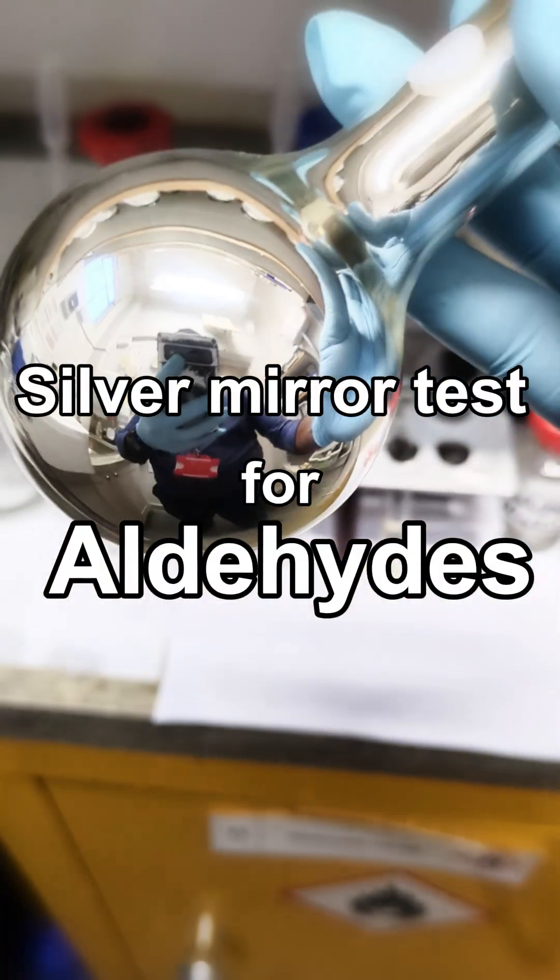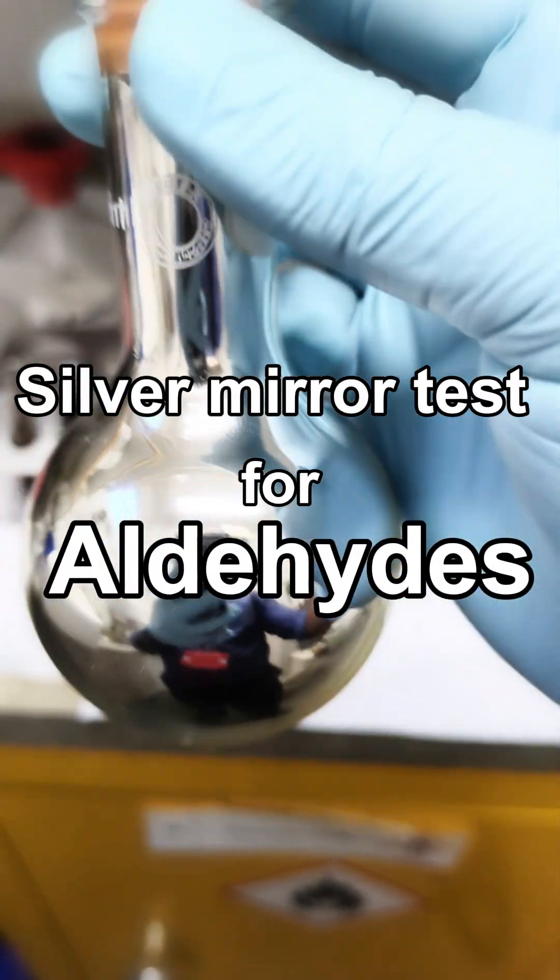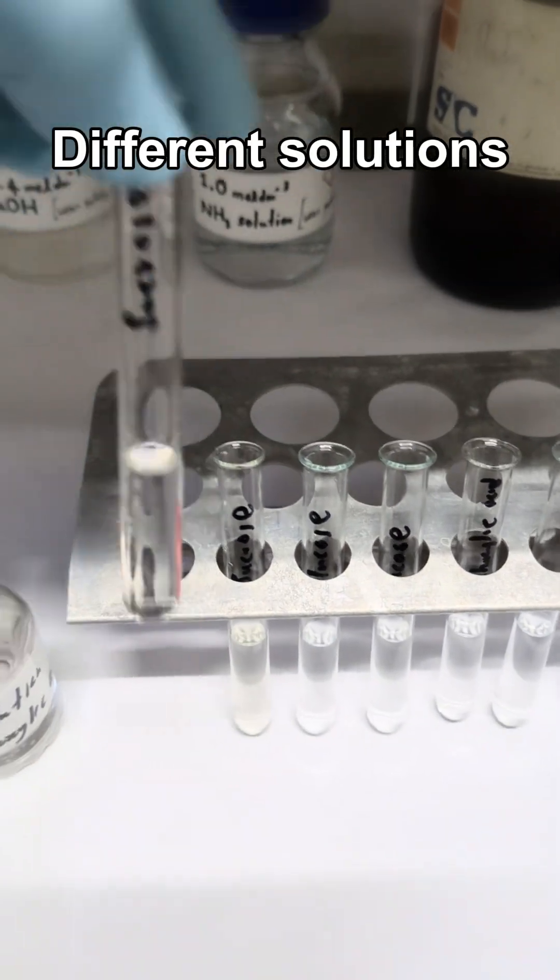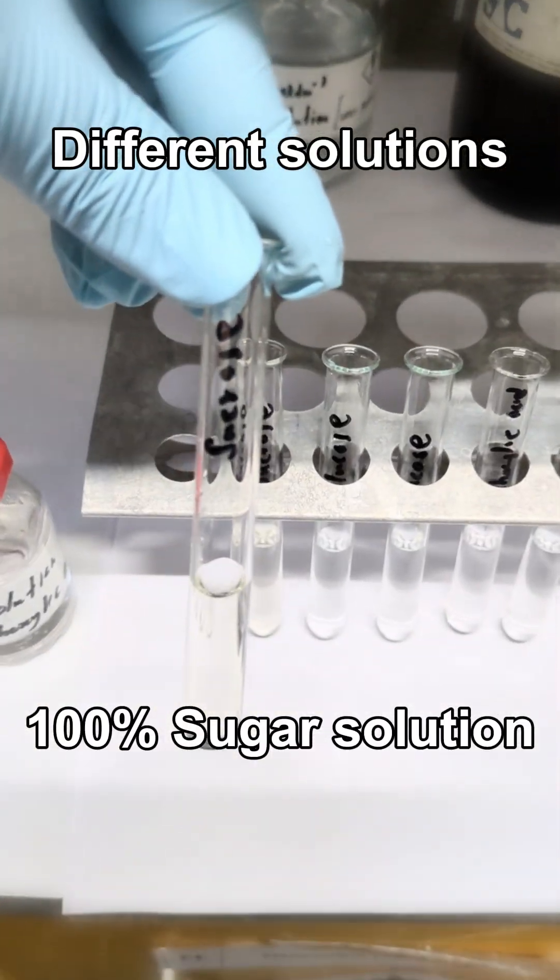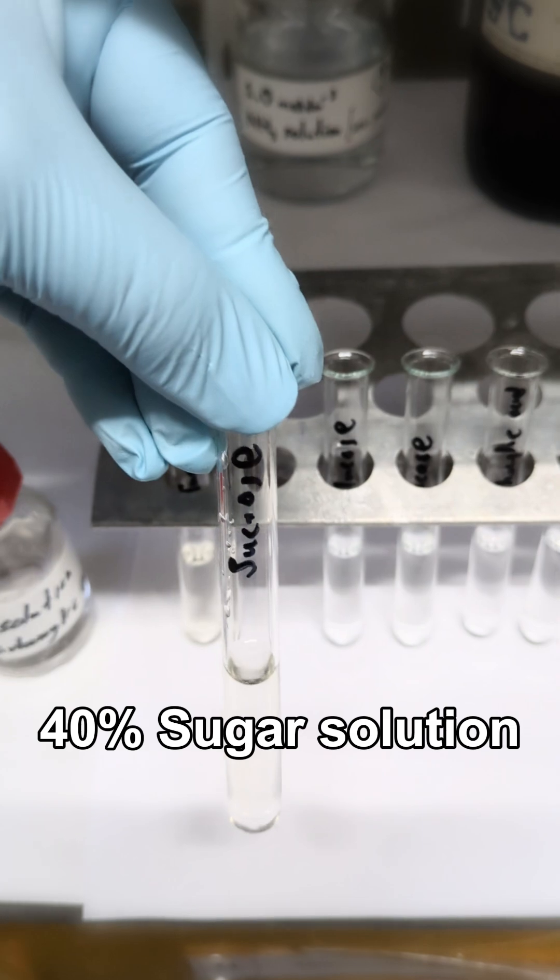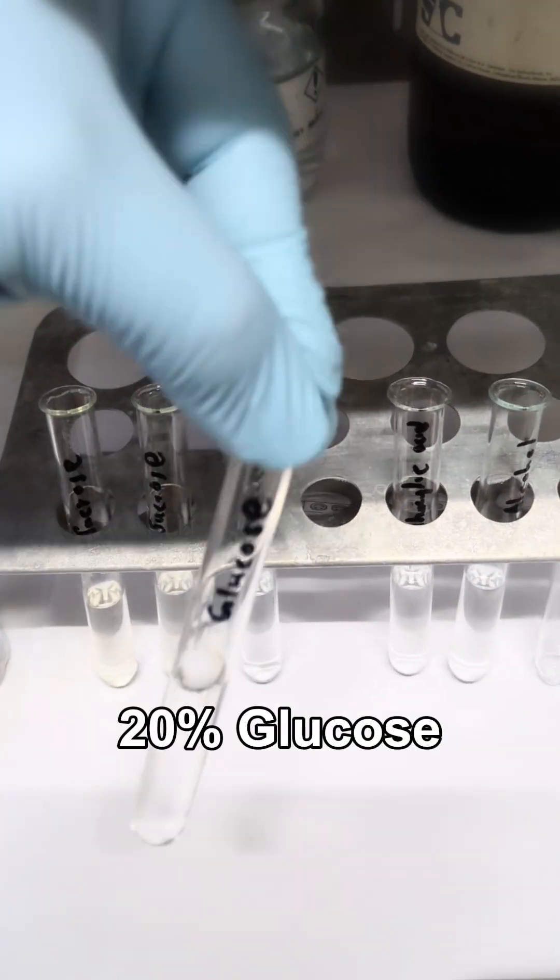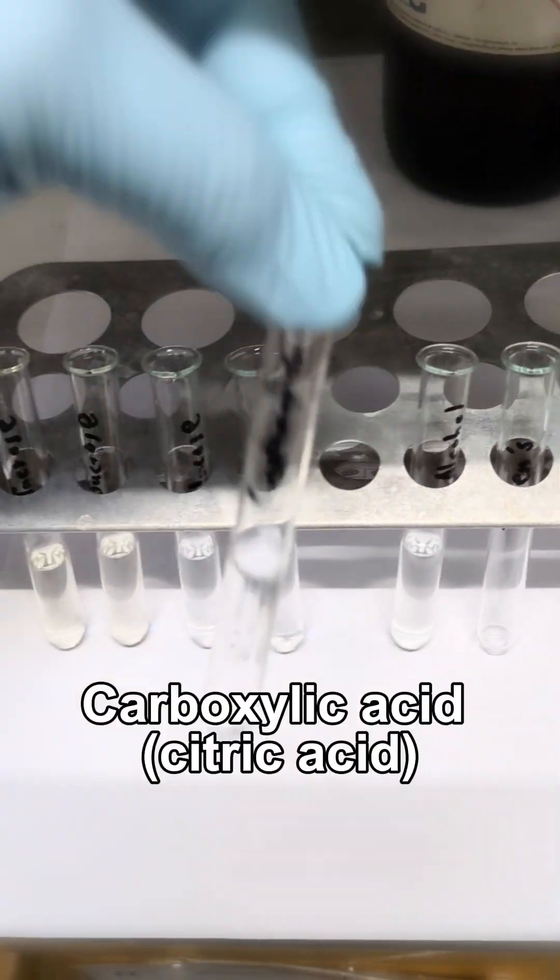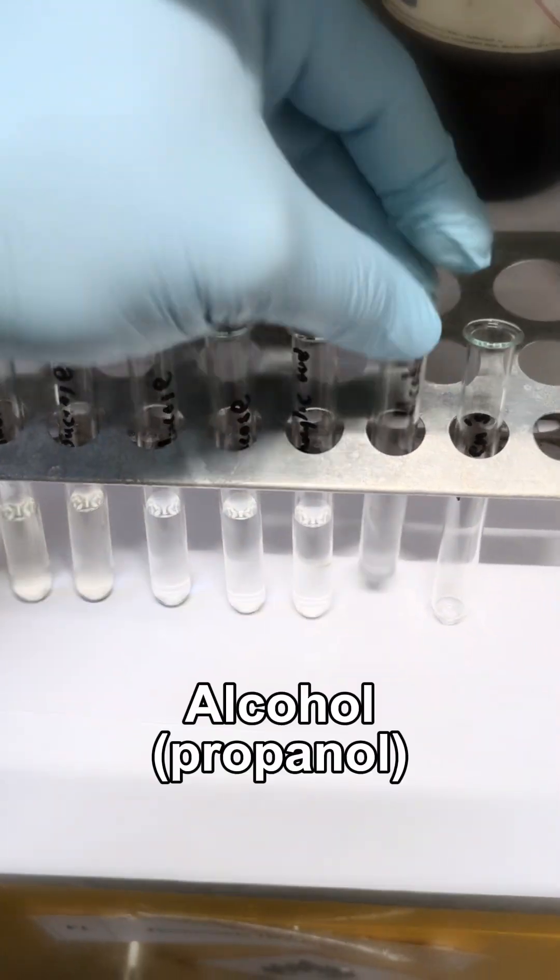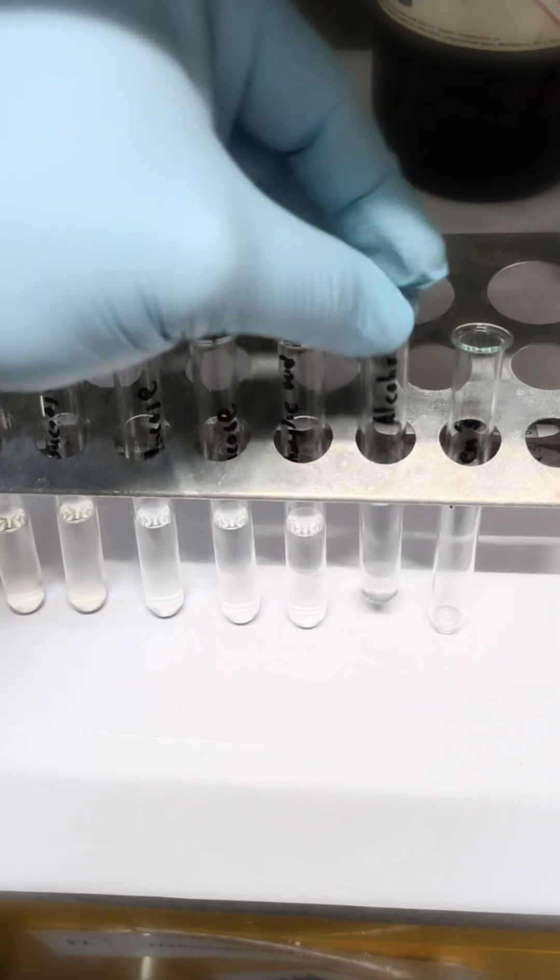Silver mirror test for aldehydes. Different solutions: 100% sugar solution, 40% sugar solution, 80% glucose solution, 20% glucose solution, carboxylic acid solution, alcohol solution. Adding...